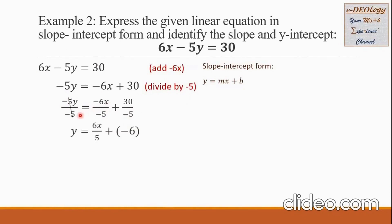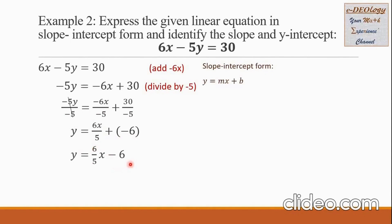Then we will simplify further. We can cancel the coefficient negative 5 and the divisor negative 5, so only y comes down. Then negative 6x over negative 5 becomes positive 6x over 5, and plus 30 divided by negative 5 is negative 6. On the next line, we can show that x has a coefficient of a fraction: it can be 6 over 5 times x, while plus and negative 6 simplifies into minus 6. From here we will now collect the slope and the y-intercept.